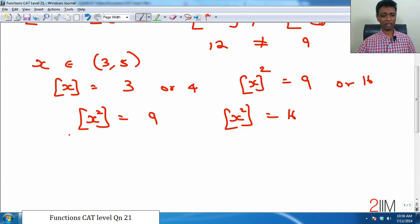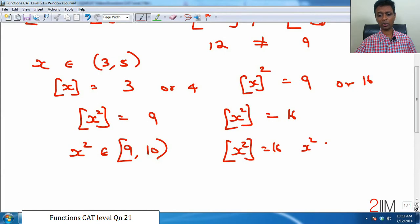If greatest integer of x square should be 9, then x square should be 9, but excluding 10. It can be 9, it should not be 10 because if it becomes 10, then greatest integer of 10 is 10. Simply put, if greatest integer of x square is 16, then x square should lie between 16 and 17. It can be 16, but it cannot be 17. 16.9999 greatest integer will be 16. So, it can lie between 9 and 10 and 16 and 17. It can be 9, it can be 16, it cannot be 10 or 17.